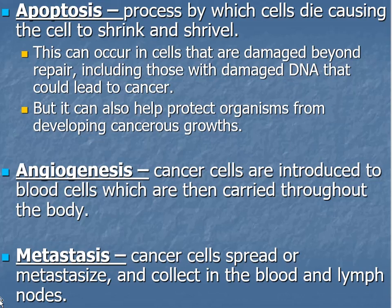Another term is angiogenesis — this is when cancer cells are introduced into the bloodstream and carried out to the body, which is closely related to the next term: metastasis. Metastasis is when cancer cells spread and collect in the blood and the lymph nodes. If you hear someone say they have metastatic breast cancer, it means the breast cancer has broken away from the breast tissue and gone into the bloodstream. Any type of cancer can reach this stage — usually stage three or stage four — and it's a lot harder to treat because it's being carried all over the body and is not localized, but it is still treatable.